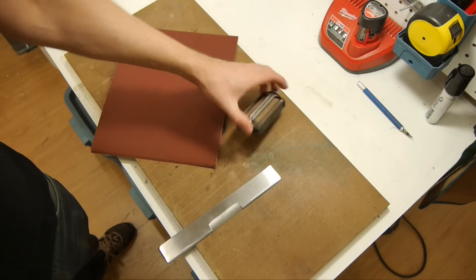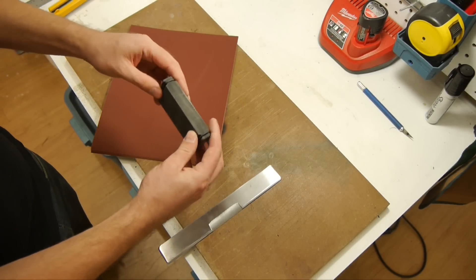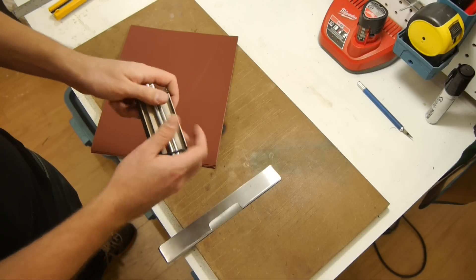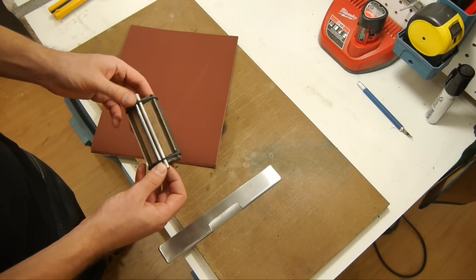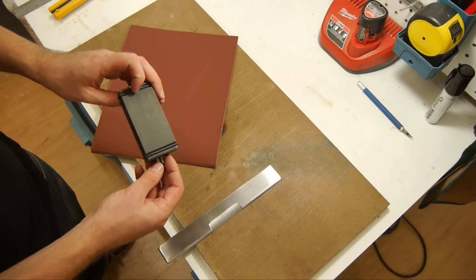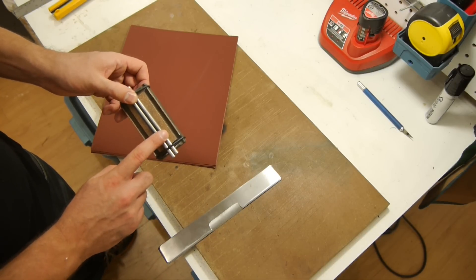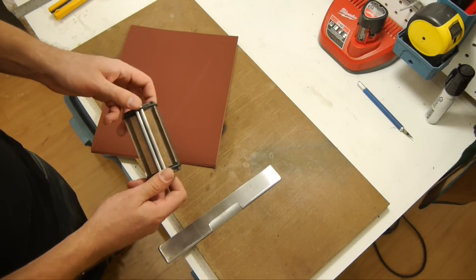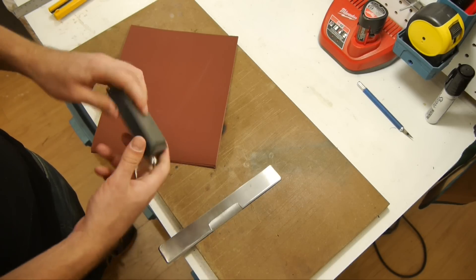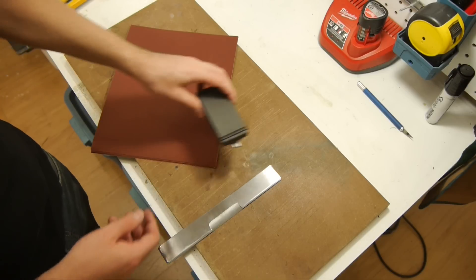And then the first sanding block you need is the rough sanding block and this is basically anything that's comfortable to hold and has a nice flat surface on the bottom. This is my specially made sanding block that I use. I have another video about this on my channel. You don't need to make this. It's useful but you can just get away with a nice wooden stick that has a flat bottom on it.